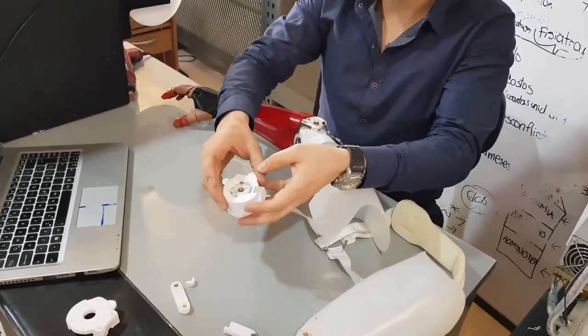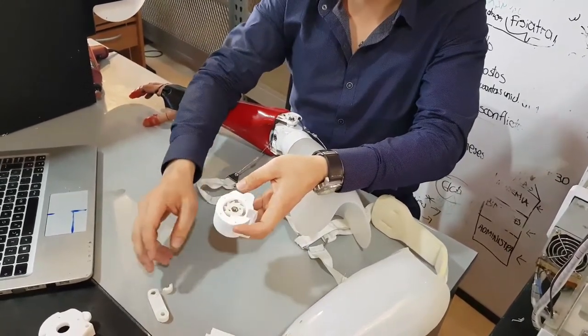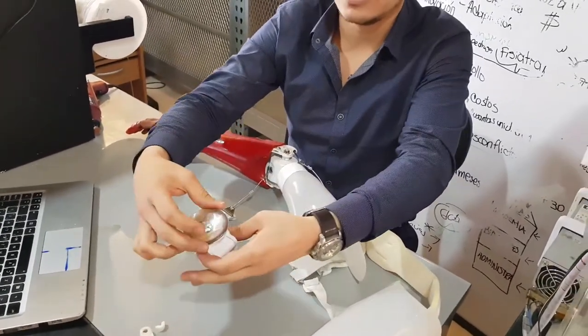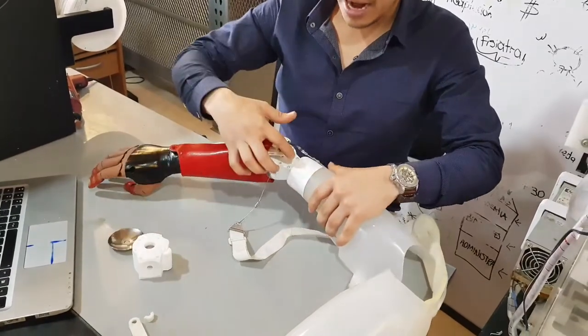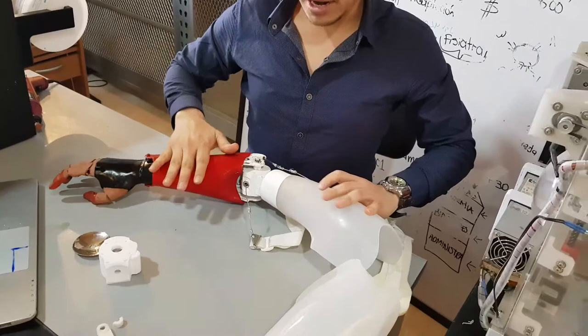It includes a 3D printed elbow for a short stump with a multi-axial connector. This is the multi-axial connector right here between the forearm and the socket.